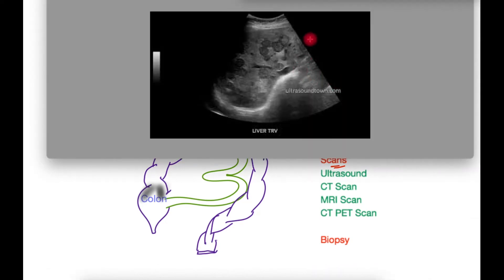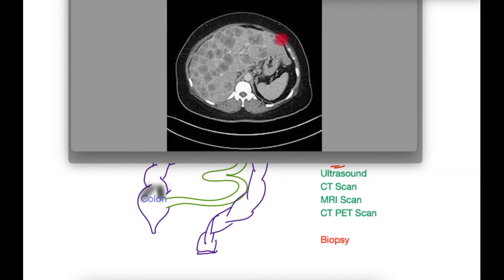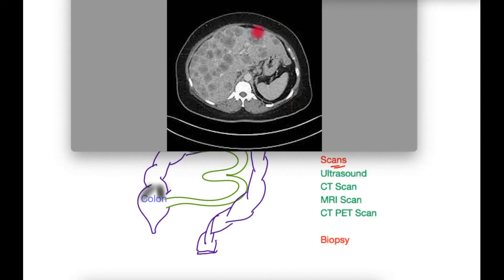These may include the ultrasound scan, seen here showing deposits in the liver as a first indication that all is not well. More commonly a CT scan is performed, and in this instance you can see the outline of the liver with a lot of deposits denoting metastatic spread.